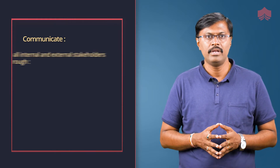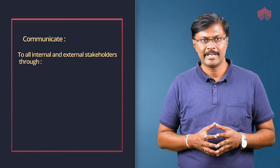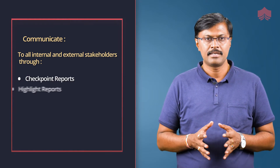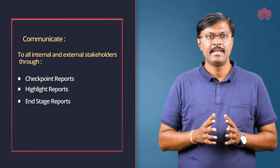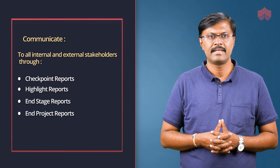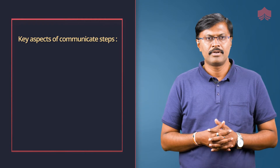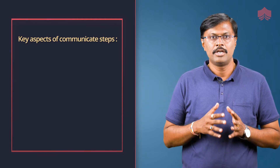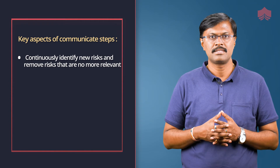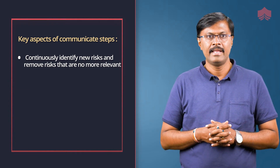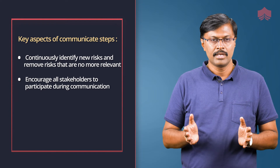As part of the communicate step, communication happens with all internal and external stakeholders through checkpoint reports, highlight reports, end stage reports, end project reports and exception reports. Key aspects of the communicate step are to continuously identify new risks and remove risks that are no longer relevant, and to encourage all stakeholders to participate during communication.